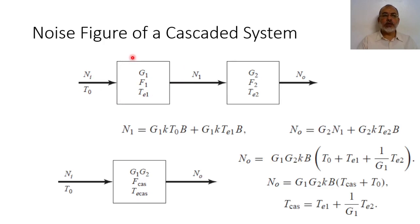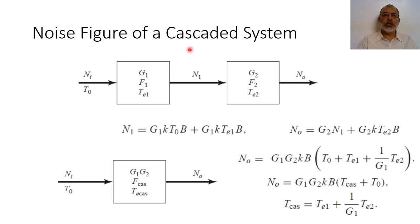Now the question is: if I have cascaded microwave networks — for example, an amplifier cascaded with a filter, and the filter cascaded with a mixer, and so on — what will be the total noise figure and the equivalent noise temperature for such a cascaded system?